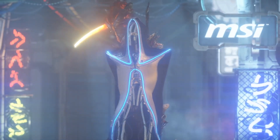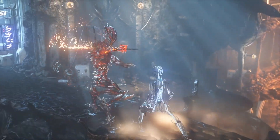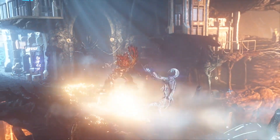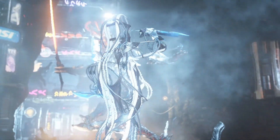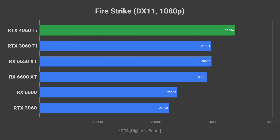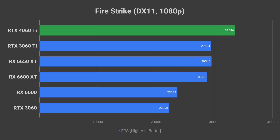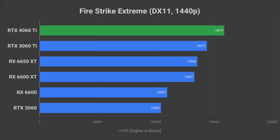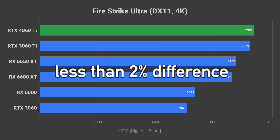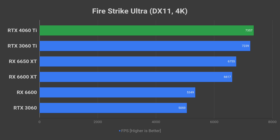Fire Strike is an older DirectX 11 benchmark. Despite its age, it remains relevant as it can provide insight into the performance of older games on the 4060 Ti. At 1080p resolution, the 4060 Ti performs 14% better than the 3060 Ti. The performance gap reduces to 10% at 1440p resolution, and at 4K there is less than 2% difference between the 4060 Ti and the 3060 Ti.